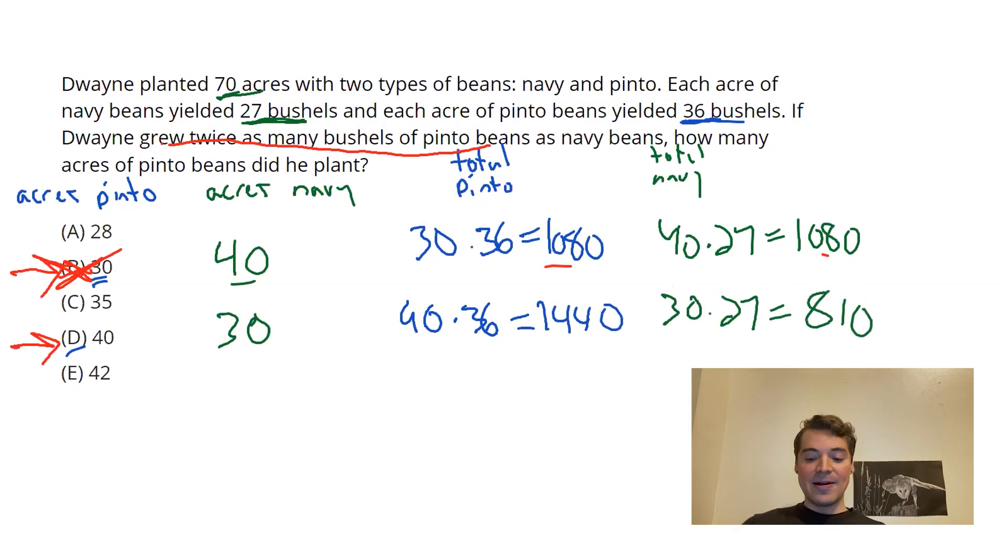Did I meet my goal there? Not quite. 810, double that would be 1620. So I didn't quite do it. But I did get closer. And here's the power of back-solving.